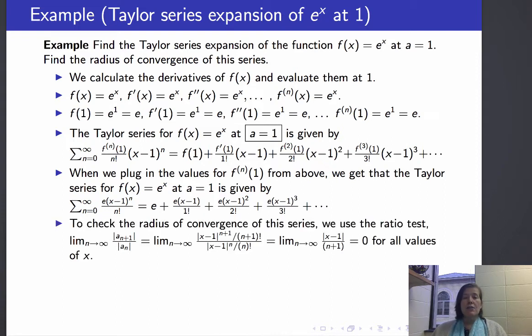So the Taylor series for e to the x at a equals 1 is the sum from 0 to infinity of e times x minus 1 to the n over n factorial. And of course I can pull that e out of every term, so it's e times the sum from 0 to infinity of x minus 1 to the n over n factorial.